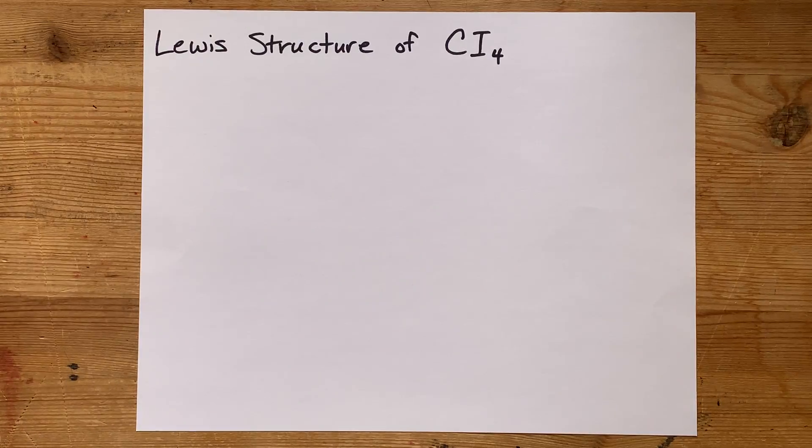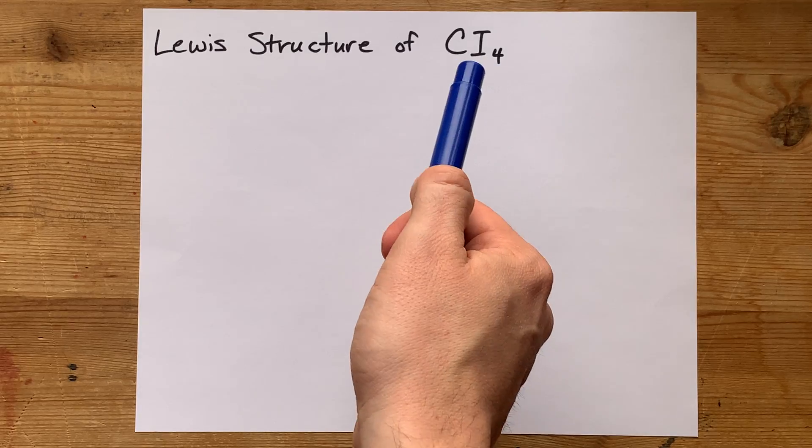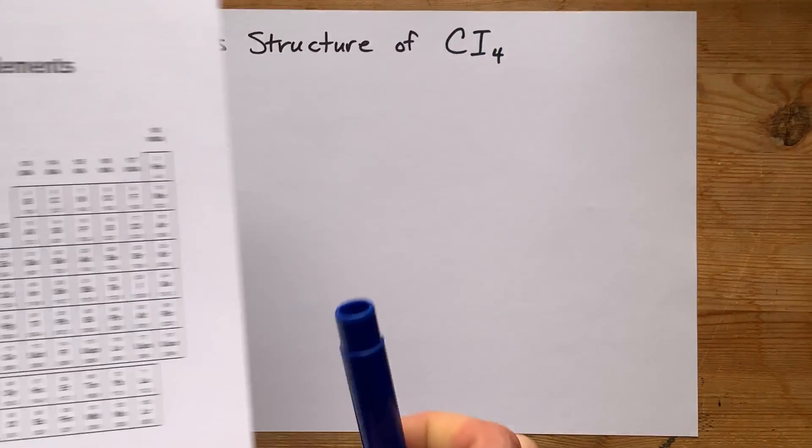We're going to draw the Lewis structure for CI4, which is carbon tetraiodide or tetraiodomethane.